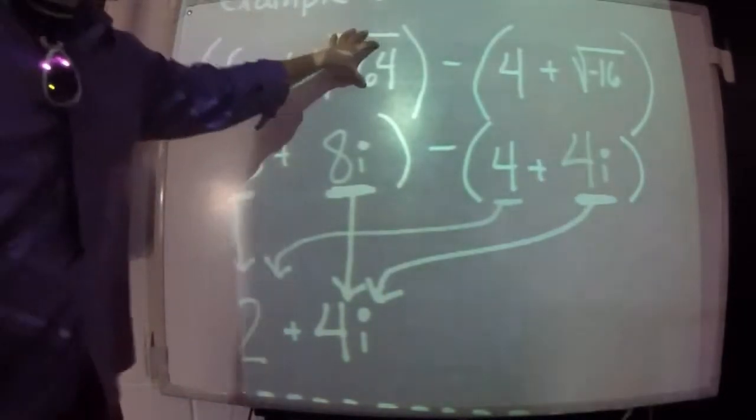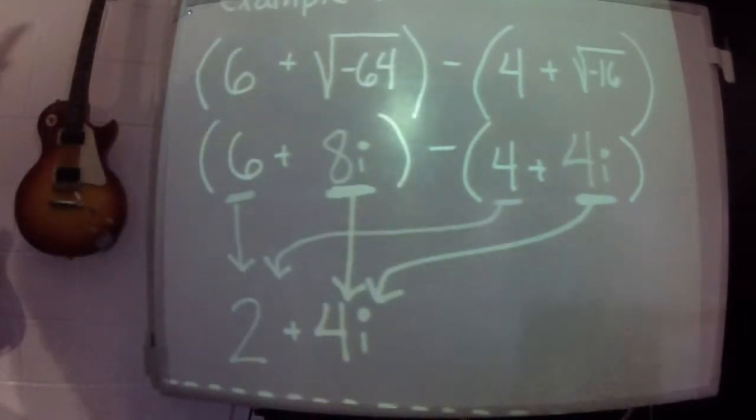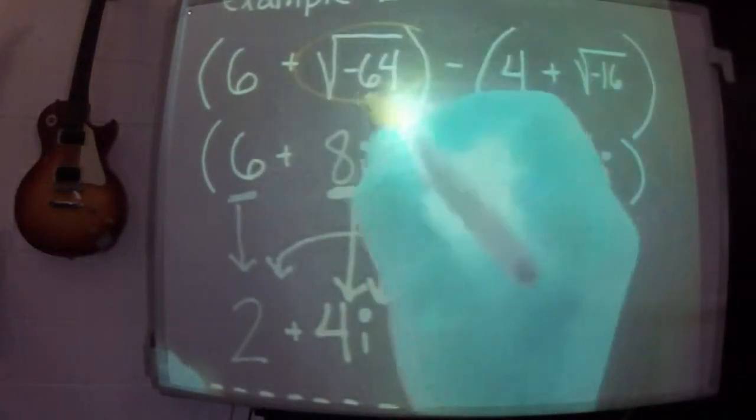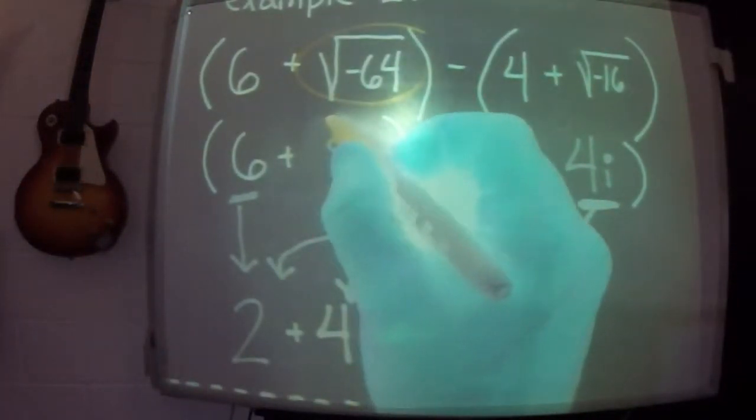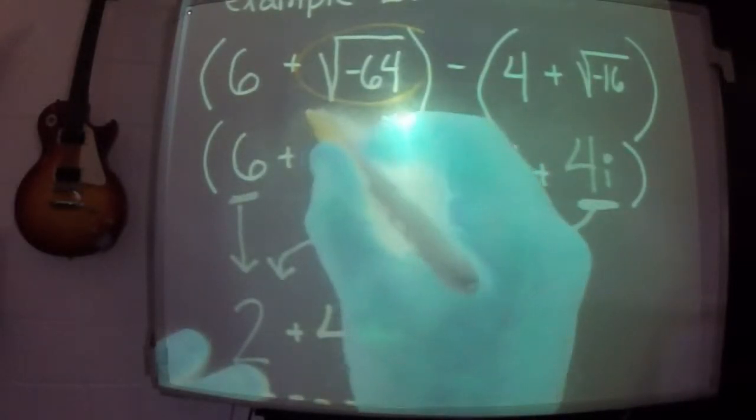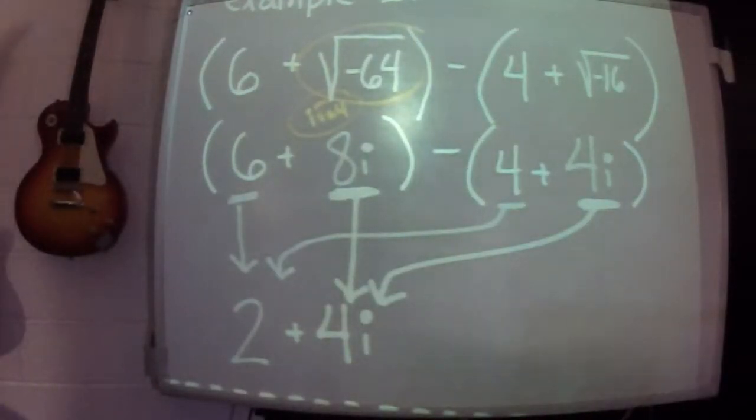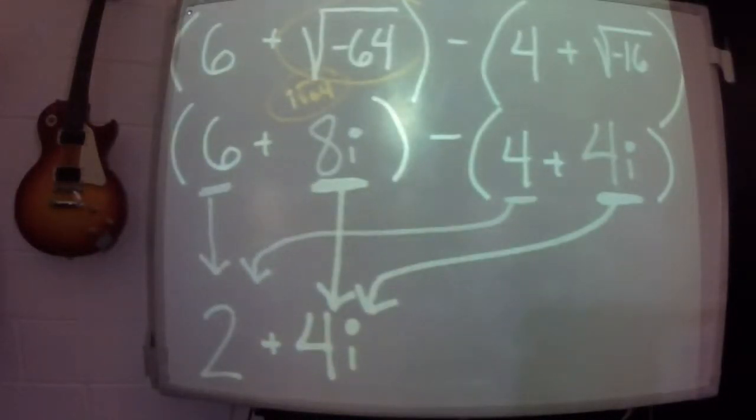So you do need to use a little brain power. The square root of negative 64 is 8i because it becomes, and I'm just going to put this here, and since this is your notes, you should put this here too. The square root of negative 64 is i square root of 64, and then the square root of 64 is 8. That's where 8i comes from.